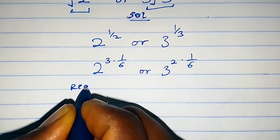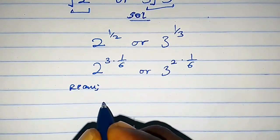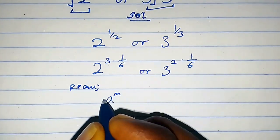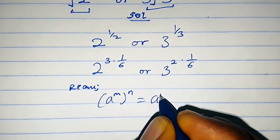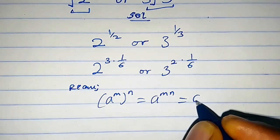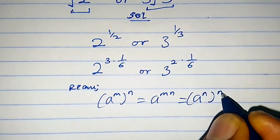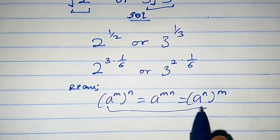Recall that if a raised to the power m times n, we can write it as a raised to the power mn, which is also the same thing as a raised to the power n times m. We're going to utilize these properties for these expressions.